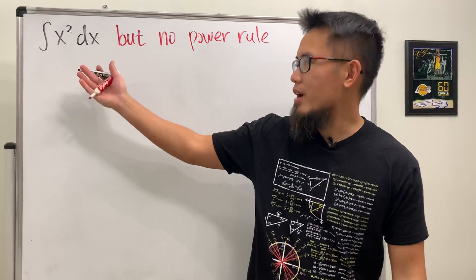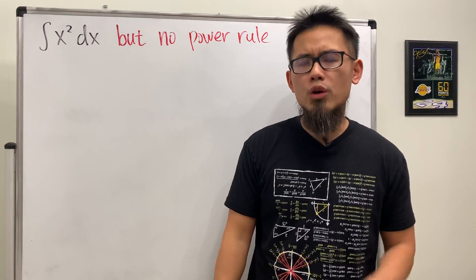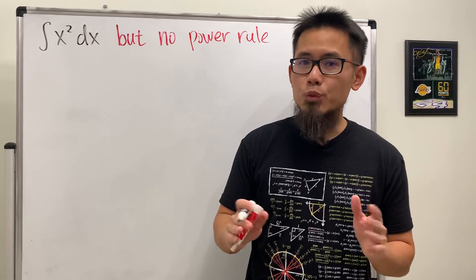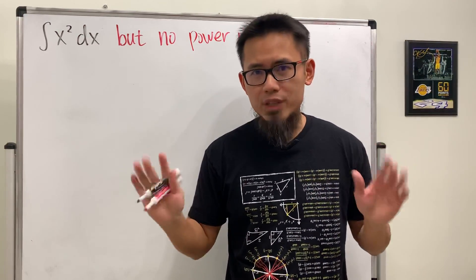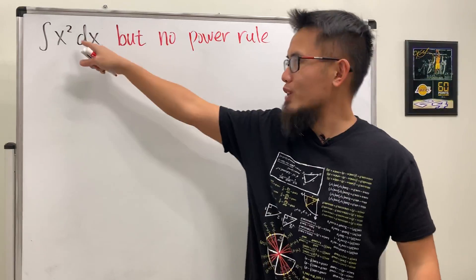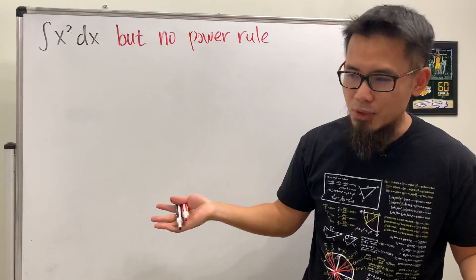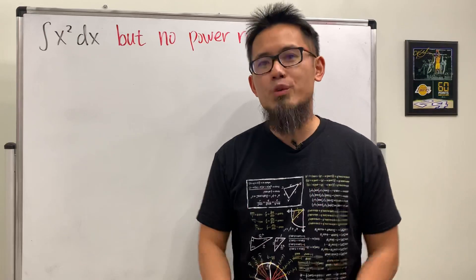We'll be integrating x squared, but we are not going to be using the power rule of any kind. Meaning that we are not going to bring the power to the front and minus one, no power rule for derivative. And do not add one to the power and then divide it by the new power, no power rule for integral as well.